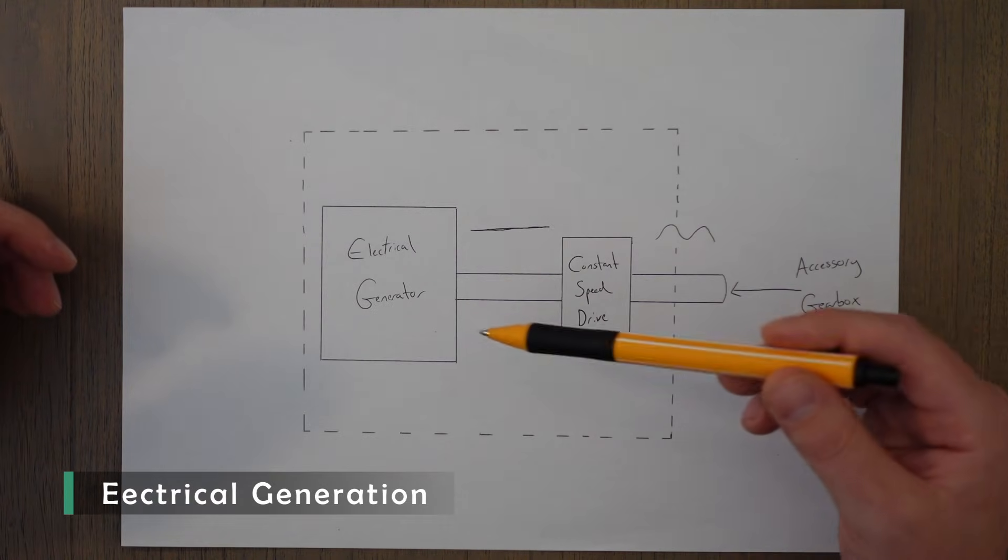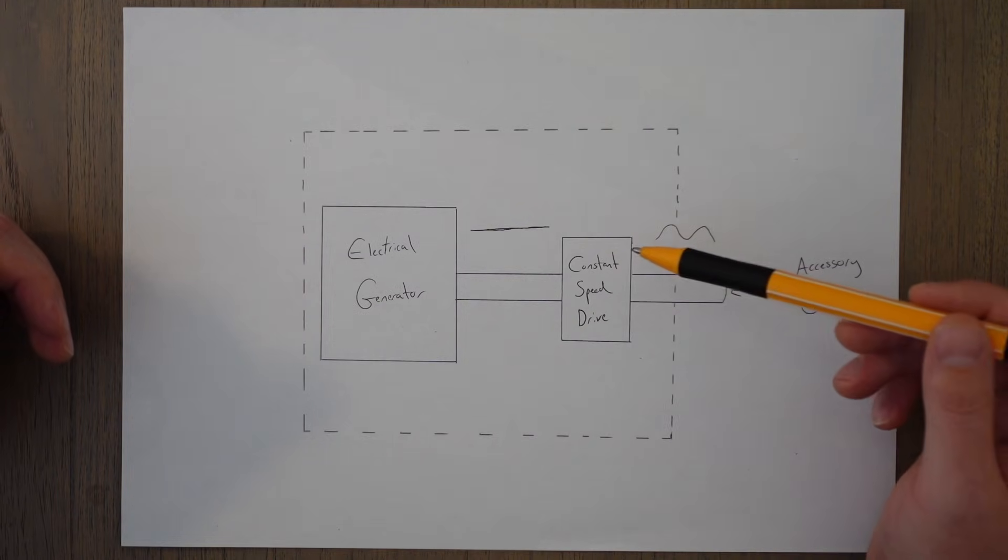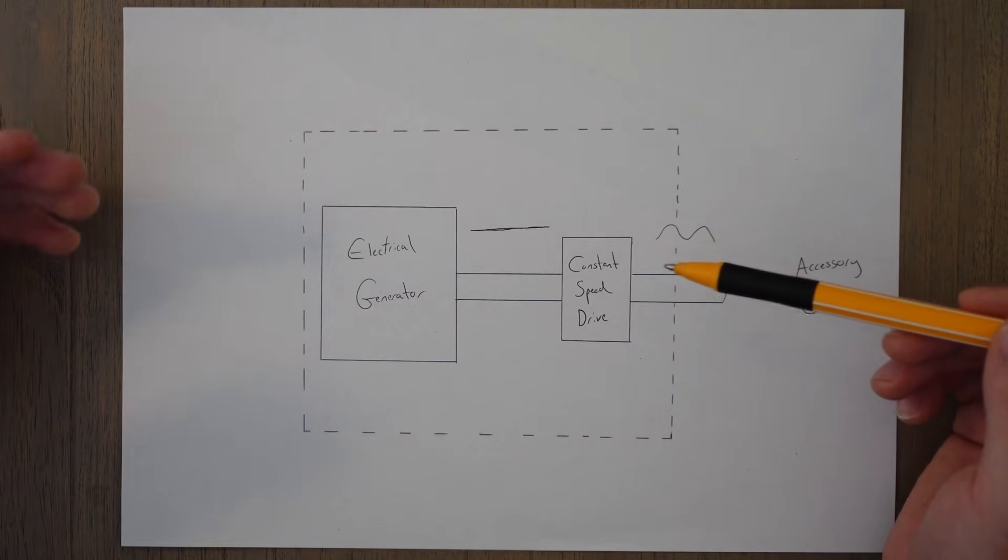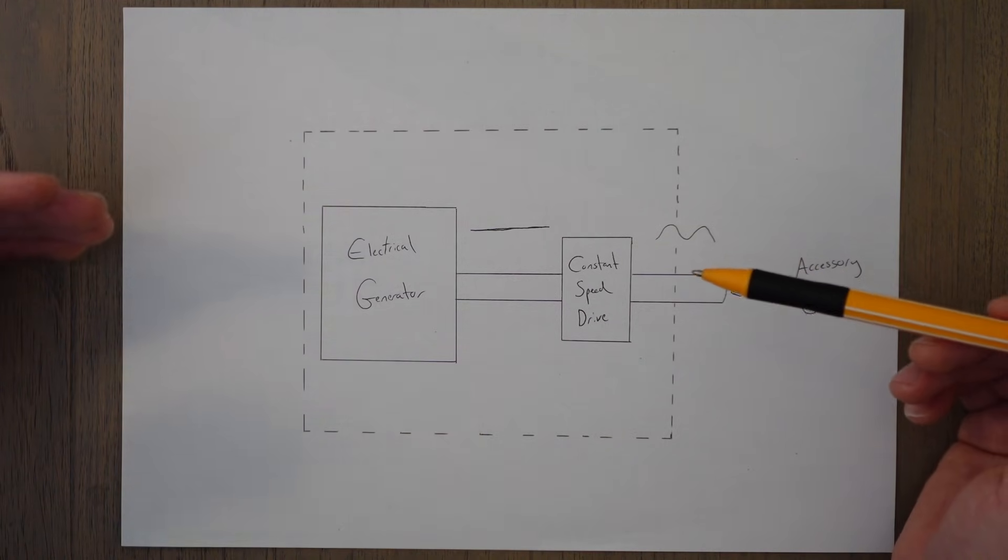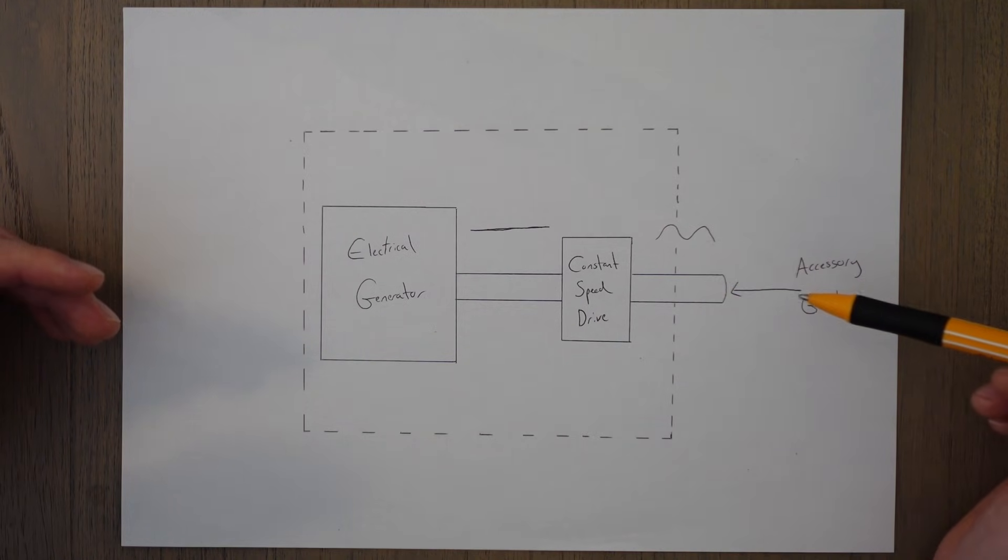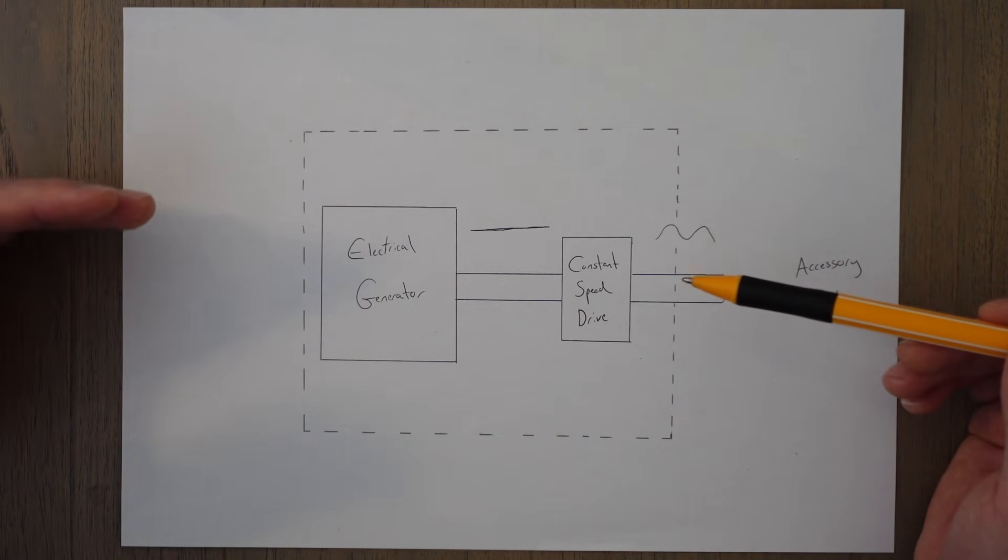To create AC electricity for use in the aircraft, we use a generator attached to a device called a constant speed drive. A constant speed drive will do exactly what it says on the tin—it will spin at a constant speed. It is a hydro mechanical device that runs off of the accessory gearbox, and the problem that this device solves is to do with the engine rotating at a range of speeds.